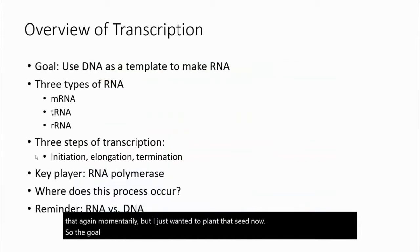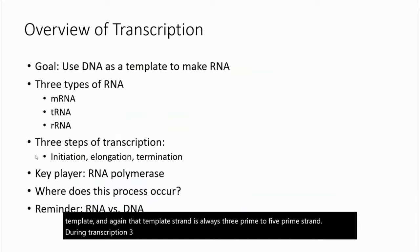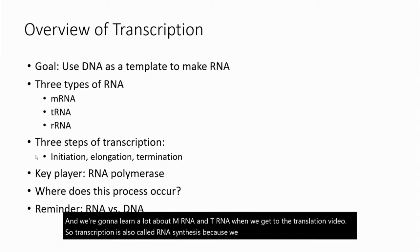The goal of transcription is to make RNA using a single strand of a DNA molecule as a template, and that template strand is always the three prime to five prime strand. During transcription, three different types of RNA are made, but we're mainly going to talk about making the messenger RNA. The three types of RNA are mRNA, which stands for messenger RNA, tRNA, which stands for transfer RNA, and rRNA, which stands for ribosomal RNA. We're going to learn a lot about mRNA and tRNA when we get to the translation video. Transcription is also called RNA synthesis because we are synthesizing or making RNA.